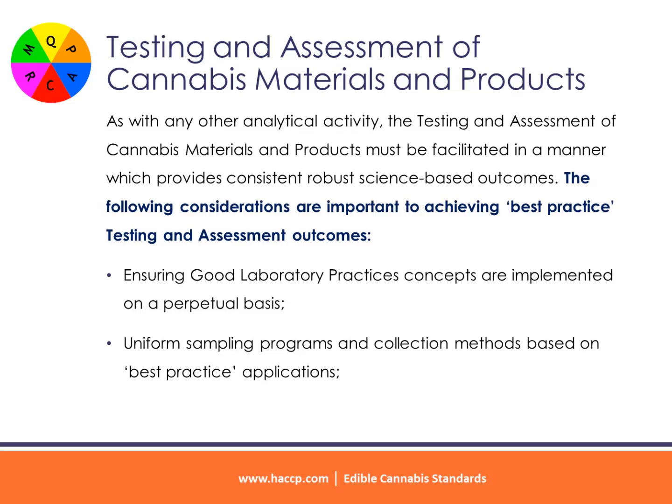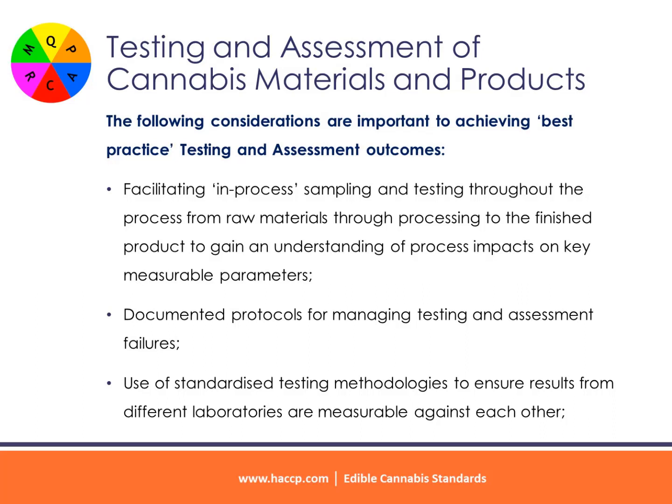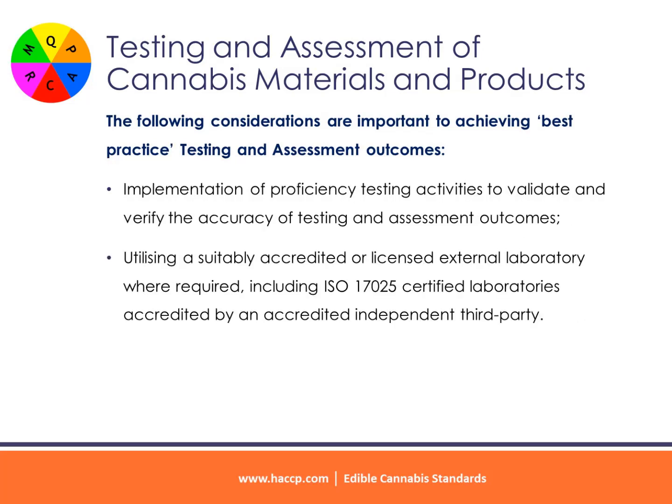Testing and assessment of cannabis materials and products: the testing and assessment of cannabis materials and products must be facilitated in a manner which provides consistent, robust, science-based outcomes. Important considerations include: ensuring good laboratory practices (GLP) are implemented on a perpetual basis; uniform sampling programs and collection methods based on best practice applications; facilitating in-process sampling and testing from raw materials through processing to the finished product; documented protocols for managing testing and assessment failures; and use of standardized testing methodologies to ensure results from different laboratories are measurable against each other.